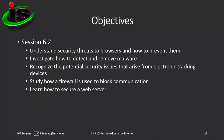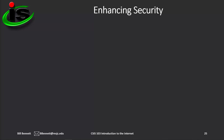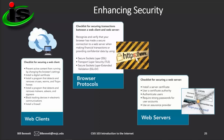In Session 6.2, you'll be learning to understand security threats to browsers and how to prevent them; investigate how to detect and remove malware; recognize the potential security issues that arise from electronic tracking devices; study how a firewall is used to block communications; and learn how to secure a web server. Computers and web servers are vulnerable to the types of threats covered in Session 6.1. Fortunately, there are countermeasures that can be implemented to protect computer assets and the data stored on them. On this screen, you see a checklist for securing web clients, securing transactions between a web client and a web server, and securing the web server itself.